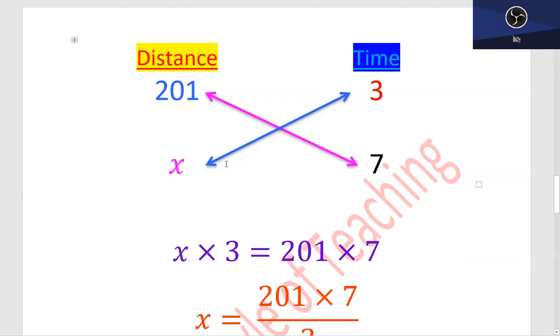This is why you have two arrows that cross - the cross multiplication concept.